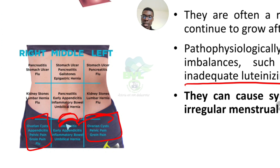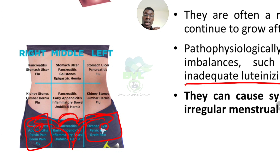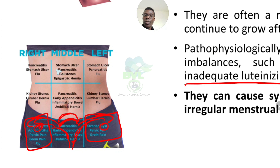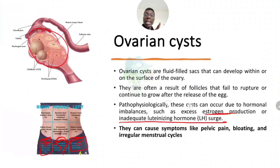The ovary is located here, with the fallopian tube nearby — so you have all these structures in that region. The pain is really felt around the pelvic region, in the lower quadrant, depending on whether it is the right or left ovary. Medical students will be familiar with these quadrants. Always seek medical advice — do a scan or ultrasound to confirm what is actually wrong rather than guessing. The most common symptoms include pelvic pain, bloating, and irregular menstrual cycles.